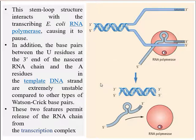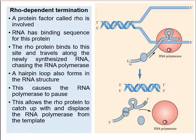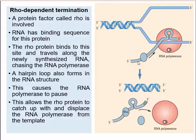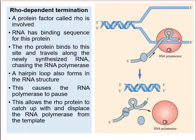Now we go to rho-dependent termination. Here a protein factor called rho is involved. The newly synthesized mRNA has a binding sequence for the rho protein. At the time of termination, the rho protein binds to this site and travels along the newly synthesized RNA — essentially chasing the RNA polymerase. In addition to this chasing by rho, a stem-loop is also formed in the RNA, slightly different from the one in rho-independent termination, but a loop is still formed.